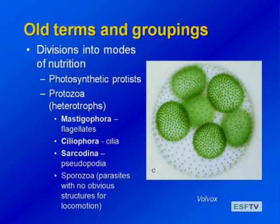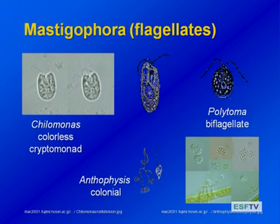The first group is the mastigophora or flagellates, which come from a number of different parts of the tree of life. Then we have ciliates, ciliophora, and then we have pseudopods, the sarcadines. There are some other groups that used to be categorized like the sporozoans and parasites, but we're not really going to discuss those as microzooplankton. These are not good taxonomic categories, but they're useful if you're just trying to group the microzooplankton ecologically.